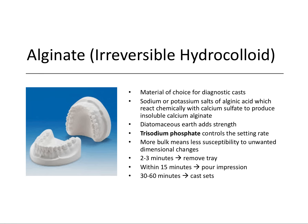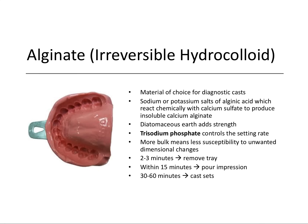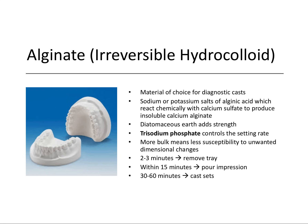Depending on what impression material you're using, about two to three minutes generally is the amount of time you'll keep the impression tray seated in the patient's mouth before it sets, at which point you remove the tray. You then pour that impression within about 15 minutes — mixing a special powder and water together to make a stone paste that hardens to form the cast. Within 30 to 60 minutes you can separate the casts from the impression and use them for the steps that follow.